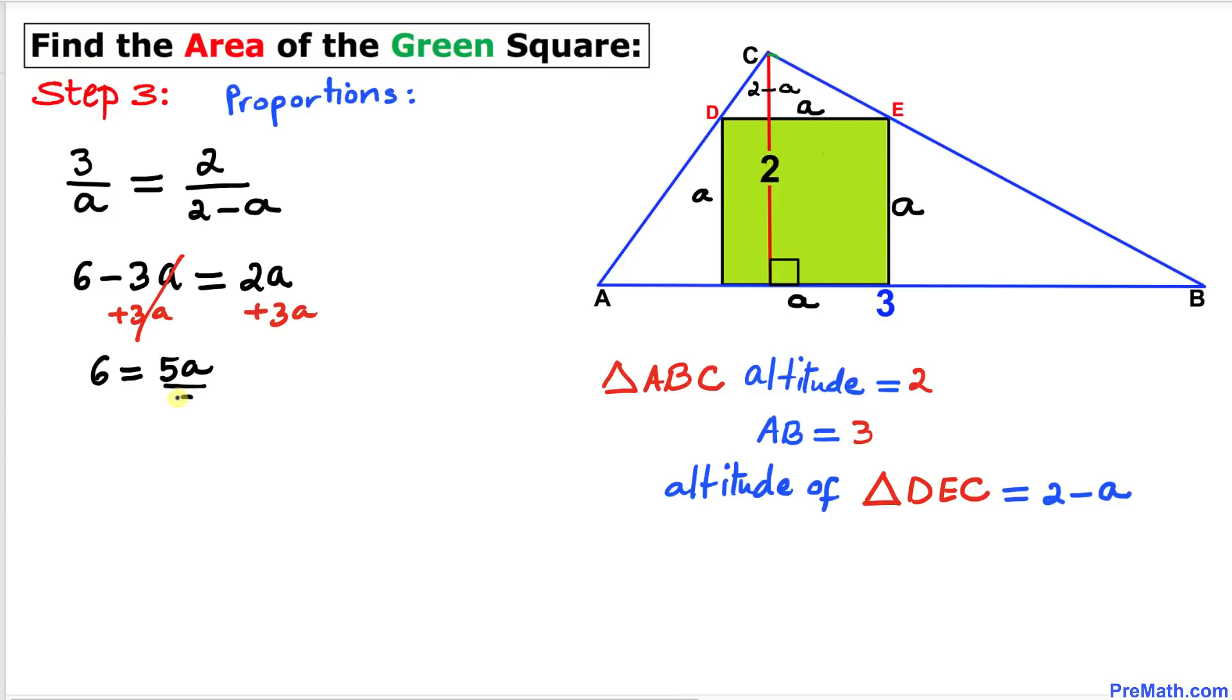Let's isolate A by dividing by 5. So our A value turns out to be 6 over 5. Thus the side length of this green square turns out to be 6 divided by 5.